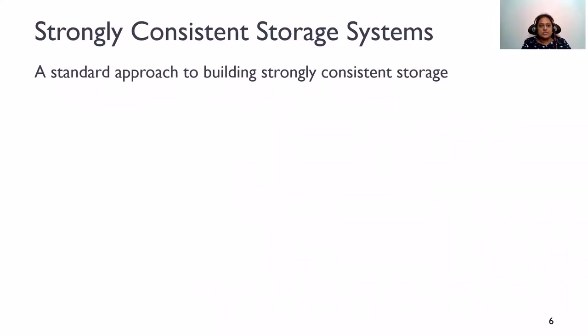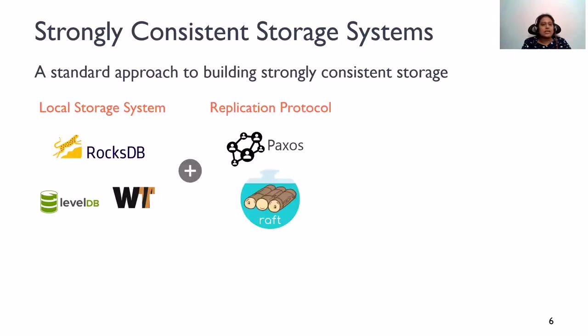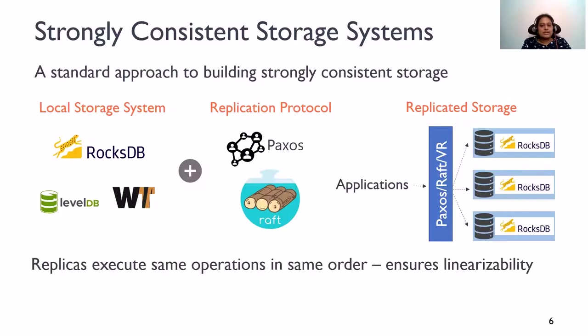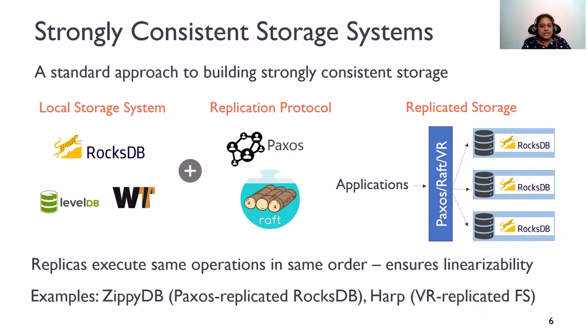Let's look at the standard approach today to building a strongly consistent system. Suppose you want to make a local storage engine like RocksDB fault-tolerant. You start with this local storage engine, and then layer a consensus protocol like Paxos on top of it. What you essentially get is a fault-tolerant RocksDB, where you have replicated copies running, and a consensus layer coordinating the operations to the database state. This layer ensures that all replicas execute the same sequence of operations ensuring linearizability. For example, Facebook's MyRocks and TiDB are built in this manner.